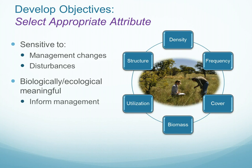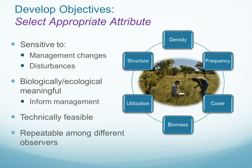We need to select the appropriate attribute that is going to inform our management objectives. These attributes need to be sensitive both to management changes and to disturbances. We want them to be biologically and ecologically meaningful, and we also need to make sure that we select attributes that are technically feasible to measure and that measurements can be repeated among different observers.